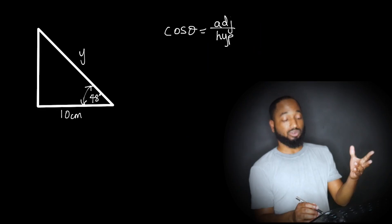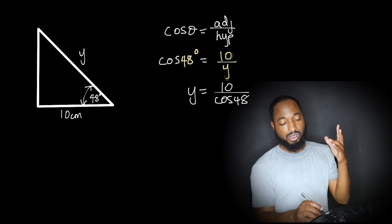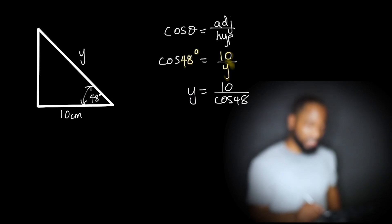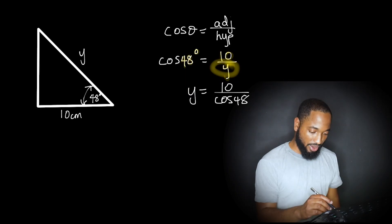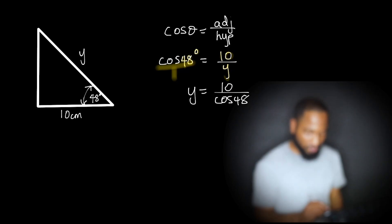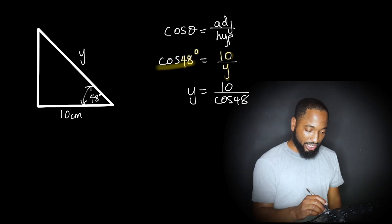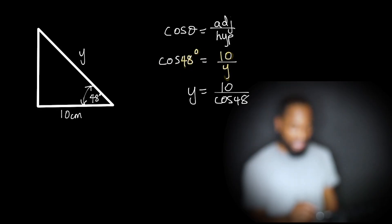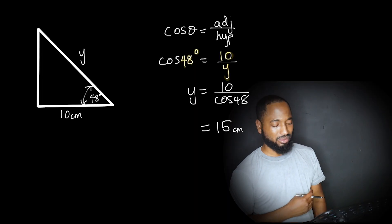Start off with cos theta equals adjacent over hypotenuse. Start off with the formula. Substitute. Rearrange. This time since the Y's underneath, it comes out like this when we rearrange and do our little algebra. You can think of this as if it was over 1, cos 48 over 1, and there's a kind of multiplying scene and then a dividing scene going on here. So you'll end up with 10 over cos 48. Plug that in the calculator, you get around 15 centimeters.